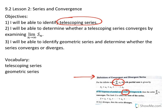Objective 3: identify geometric series and determine whether a geometric series converges or diverges. A student asked how you know by looking at a series what type it might be. For telescoping we discussed identification; now we address how to identify a series as geometric, and then determine convergence or divergence.